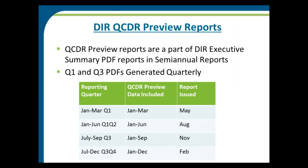DIR QCDR preview reports are part of DIR Executive Summary PDF reports. Semi-annual reports covering Q1 (January to March) and Q3 (July to September) are generated separately. Here is the schedule of reports for DIR.